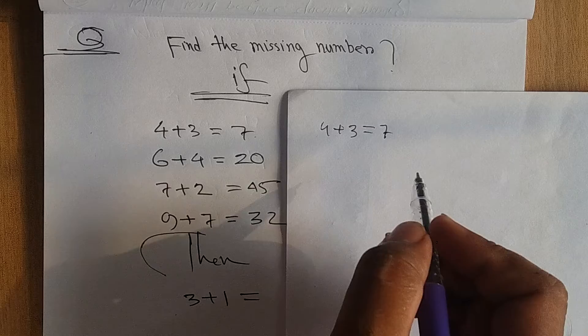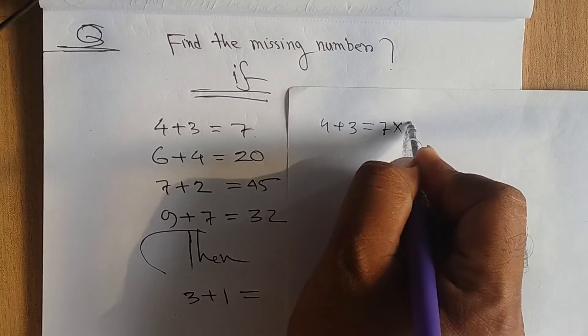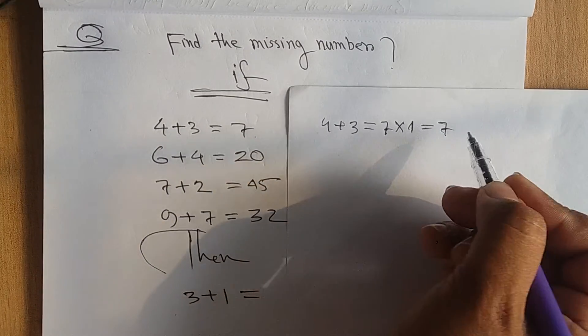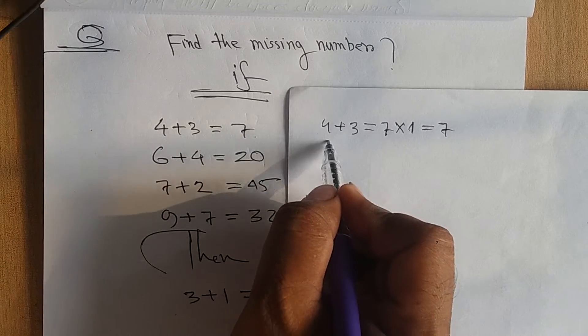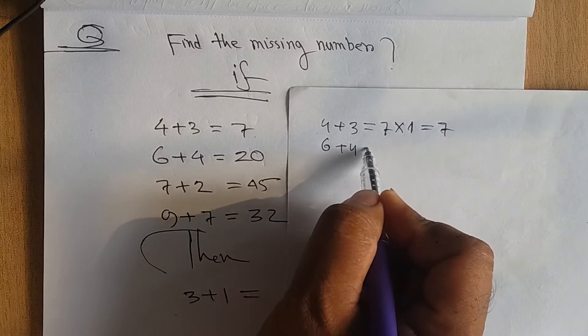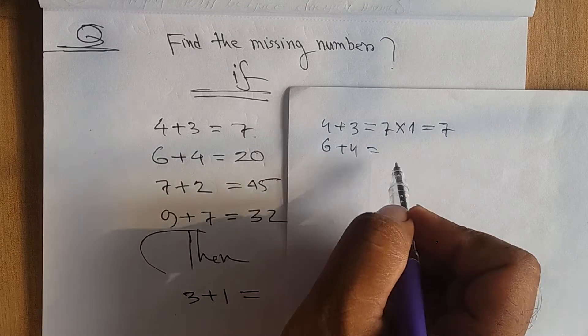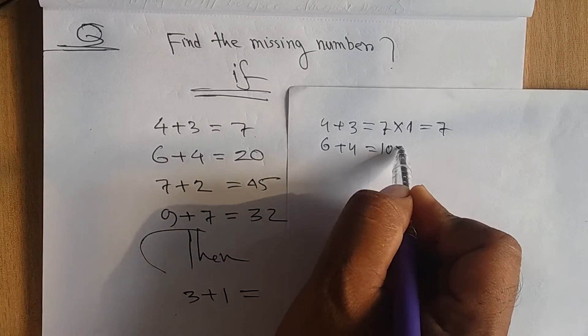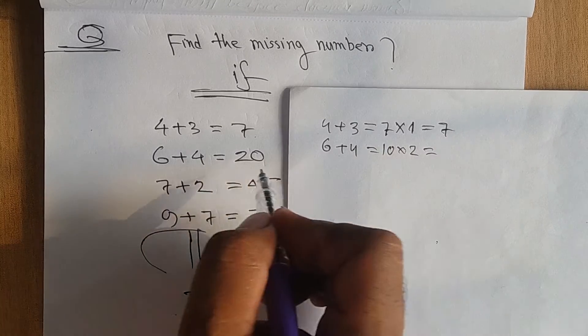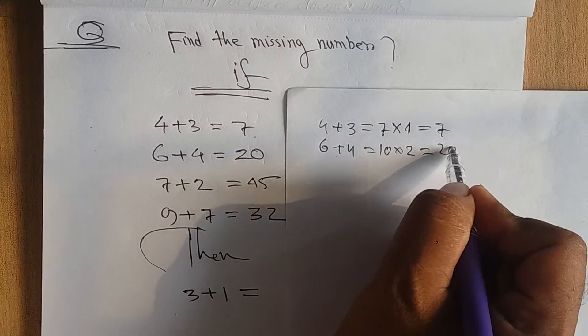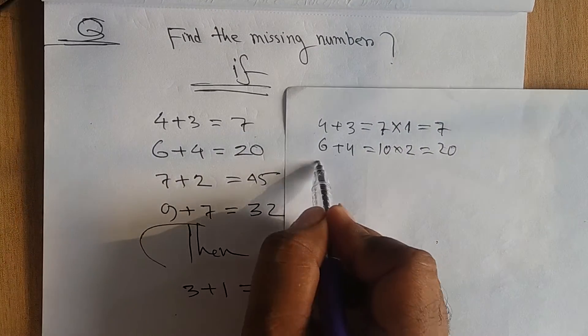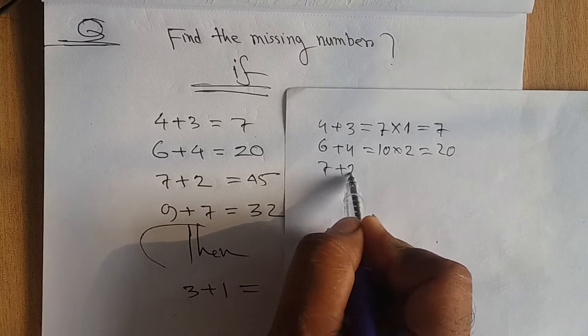four plus three judy korea amra taule goto hoi seven okay so e shangu judy amra one multiple kori taha olay amra kato pao 7 pao okay so amra 7 dekhti bachi so six plus four judy amra dad kori taha olay amra ten pi ten is shangu judy two multiple kori taha olay amra twenty